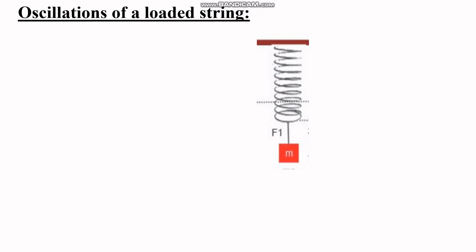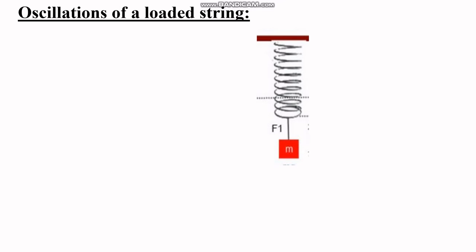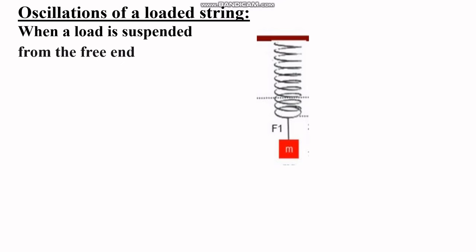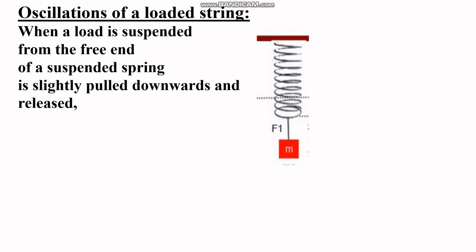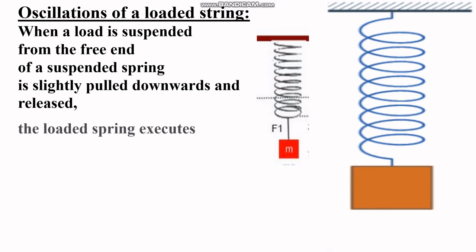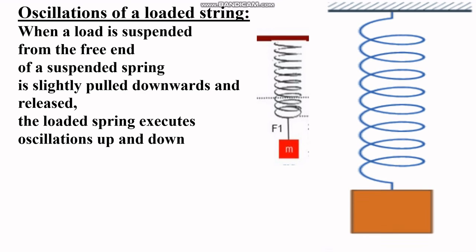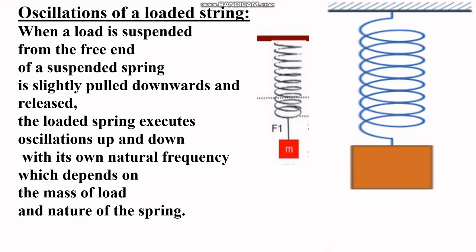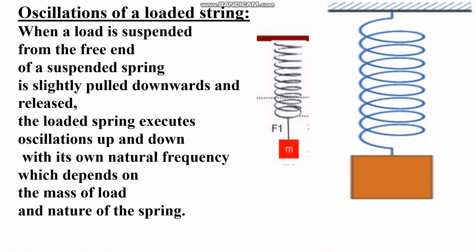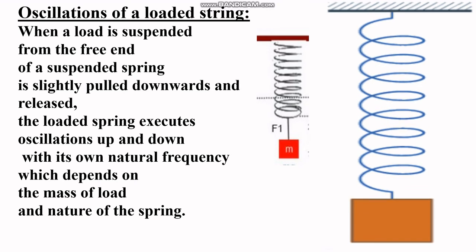Oscillations of a loaded spring: when a load is suspended from the free end of a spring and is pulled down and released, the loaded spring executes oscillations up and down with its own natural frequency, which depends on the mass of the load and the nature of the spring. These vibrations executed by the loaded spring are free vibrations.